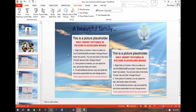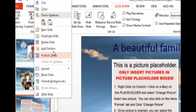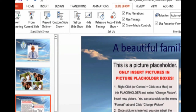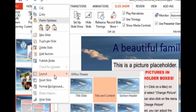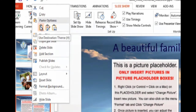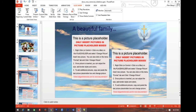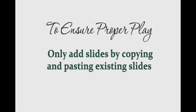To add a slide to your show, select the thumbnail of the slide you'd like to duplicate. Then right-click and choose Copy. Then right-click again and choose Paste — you'll see a duplicate of the slide right under the original. It will contain all the animations of the original slide. Only add slides by copying and pasting existing slides to ensure your show plays properly.